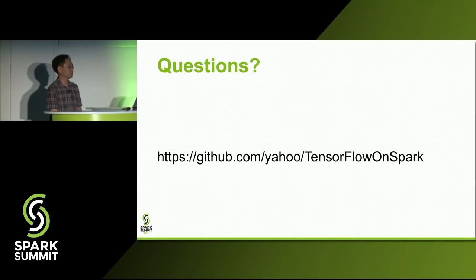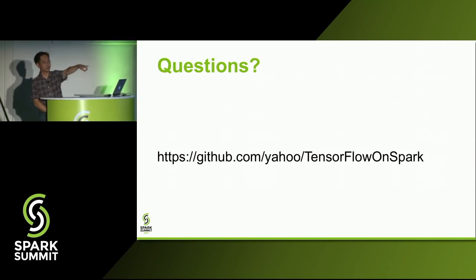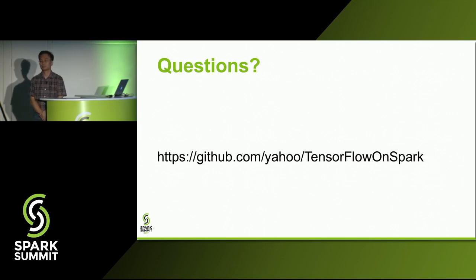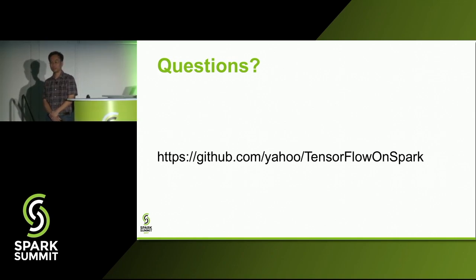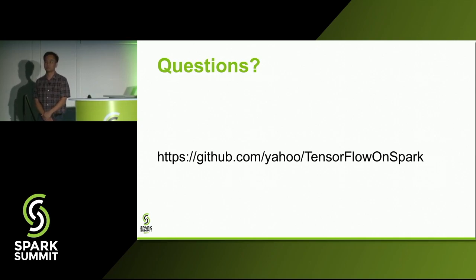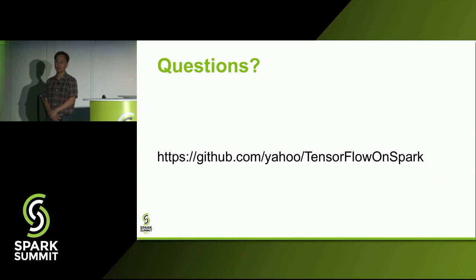Q&A: The first question was about resource management. We've tested primarily with YARN internally. You can use Spark Standalone — we have instructions for that. We've also played with Mesos. We might look into Kubernetes in the future. YARN is mostly a byproduct of what we've been using internally at Yahoo.